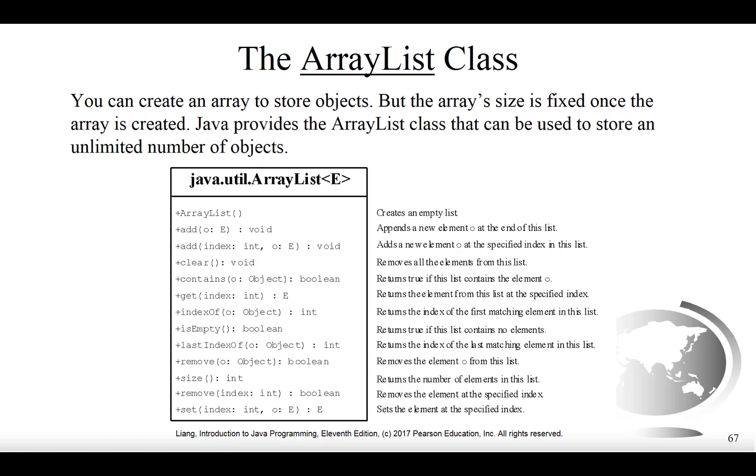You'll notice that only one constructor is shown in the ArrayList and what it does is it creates an empty list. From there you can see there are methods for adding, for adding at a particular index, for clearing the array to make it empty. After you've been using it, it's not empty anymore but you may wish to restore it to being empty and you can do that with the clear method.